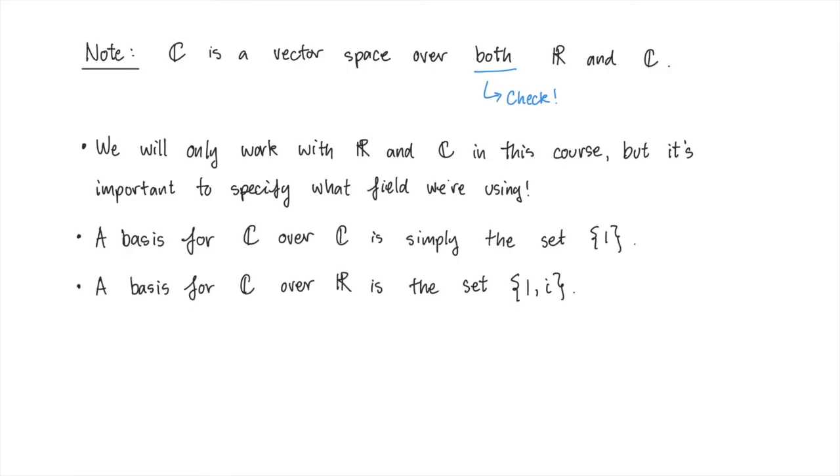As a quick example for why this would matter, let's think about the complex numbers as a vector space over C. This vector space is one-dimensional, and a basis over C is just the set consisting of the single element, 1. You should check this if you don't believe me.